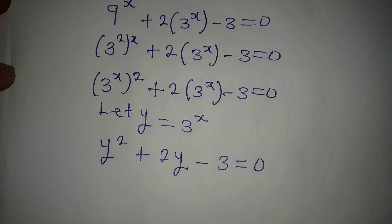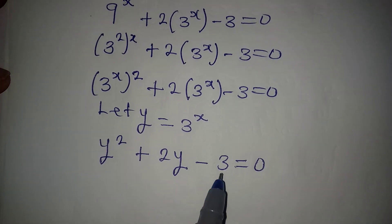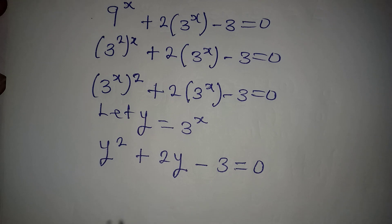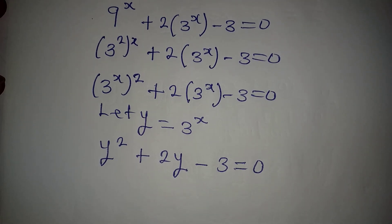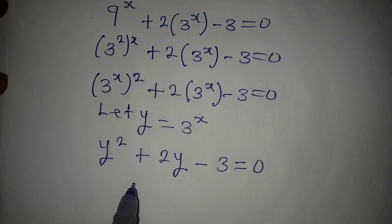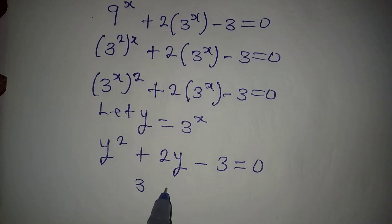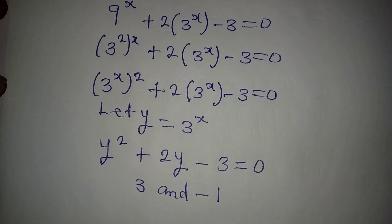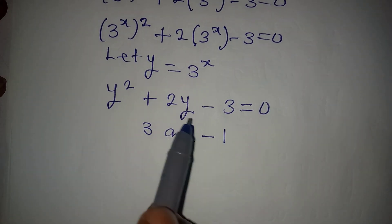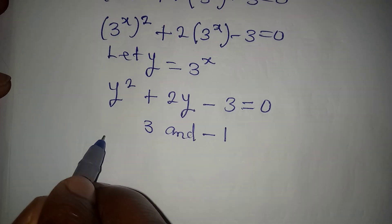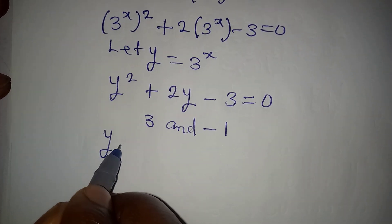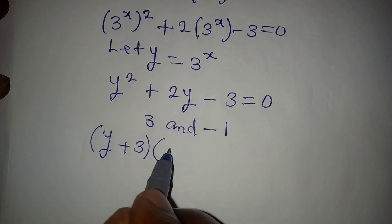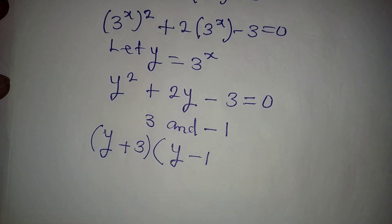From here we start looking for two numbers that multiply to give minus 3 and add to give 2, solving by the factorization method. The two numbers are 3 and minus 1, because 3 times minus 1 is minus 3, and 3 minus 1 is plus 2. So factorizing gives us y plus 3 as one factor.